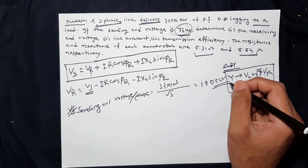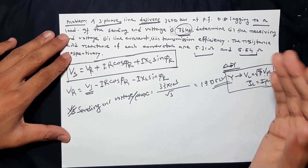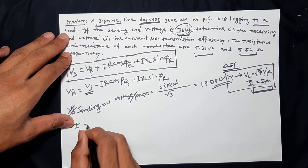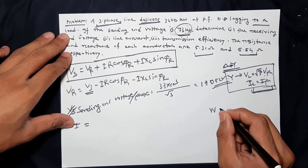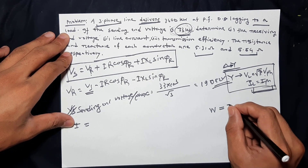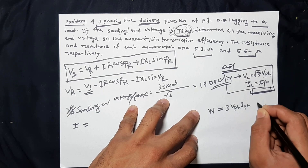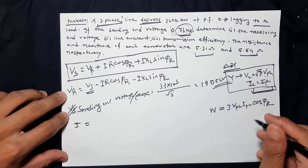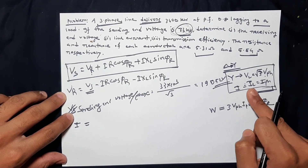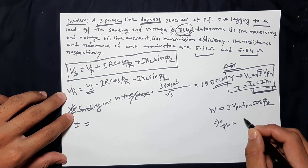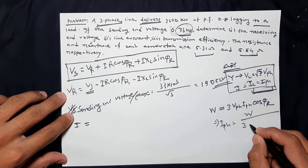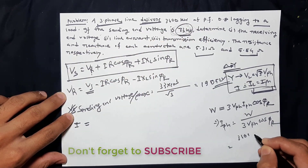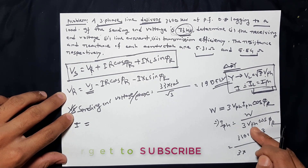We will change the phase current. The line current is the same as phase current for a star (Y) connection, so line current equals phase current. The three-phase power formula: total power W equals 3 × VPH × IPH × cosφ. So IPH equals power divided by 3 × VPH × cosφ. That means: IPH = (3400 × 10³) divided by 3 × VPH.